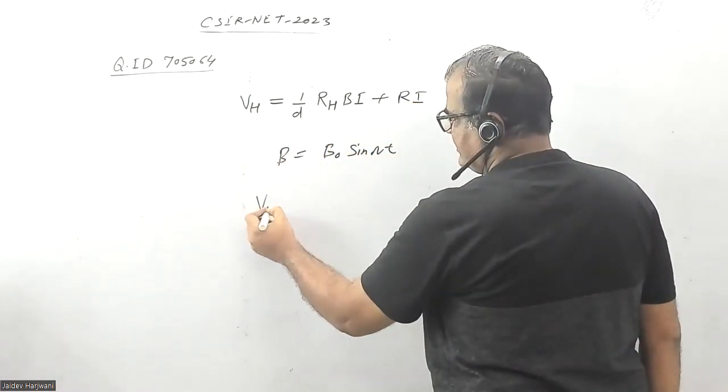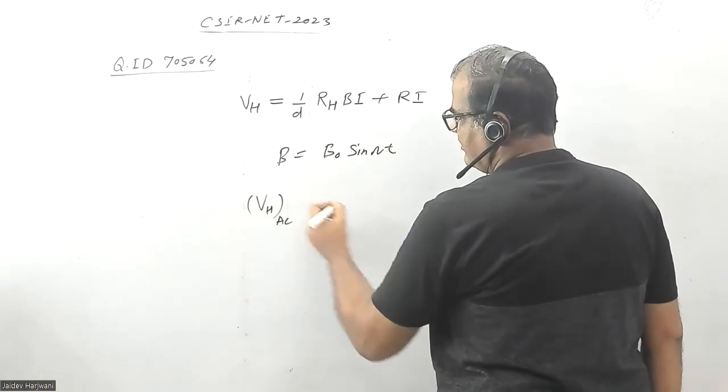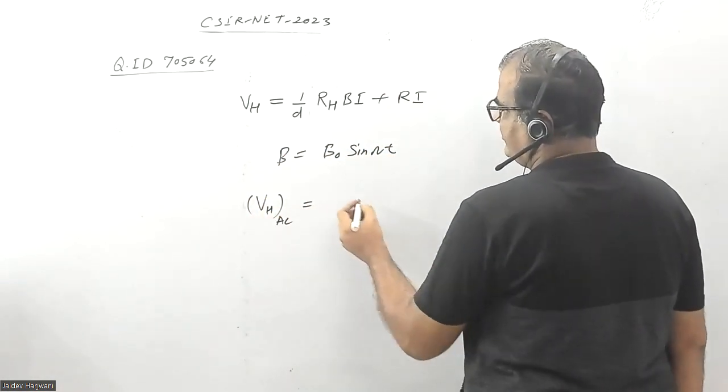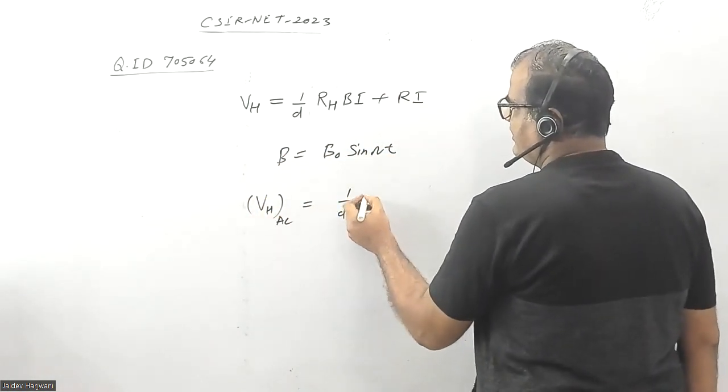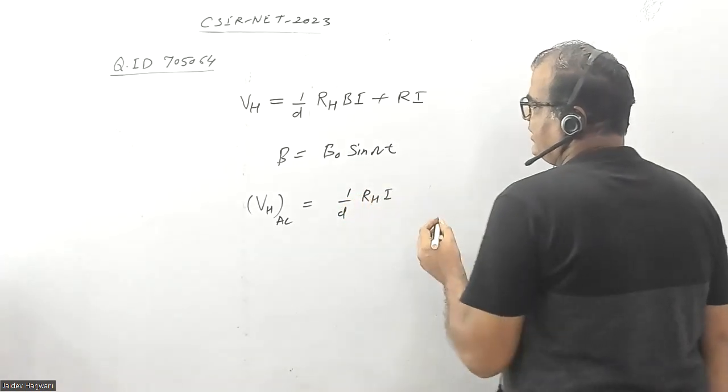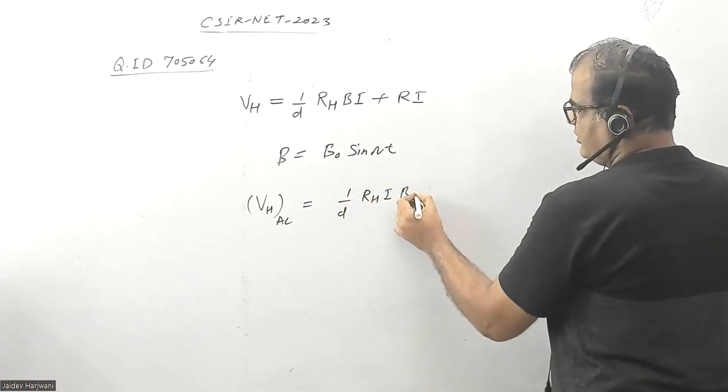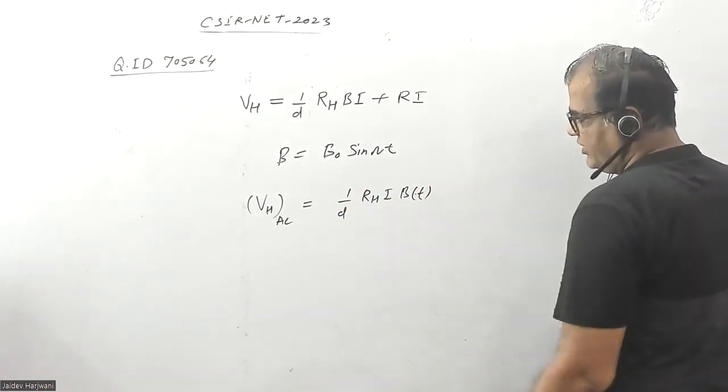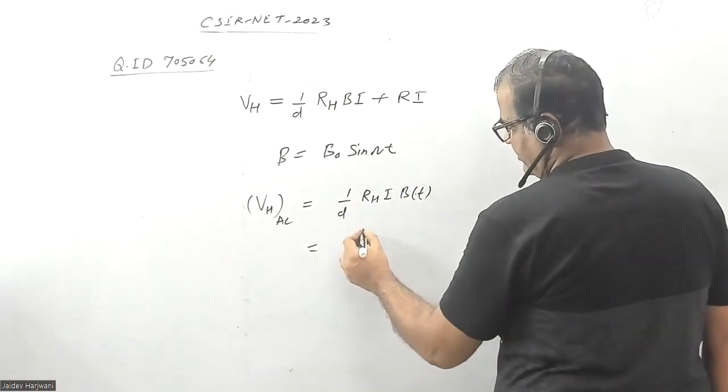When you measure the Hall voltage, it will also be AC. The AC Hall voltage is V_H = (1/D) * R_H * I * B_0 * sin(ωt), where ω is the frequency.